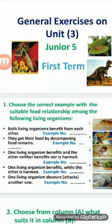Hi, Junior 5 students. Today we will revise Unit 3. First, I'll remind you that there are three types of food relationships among living organisms: predation, symbiosis, and saprophytism.